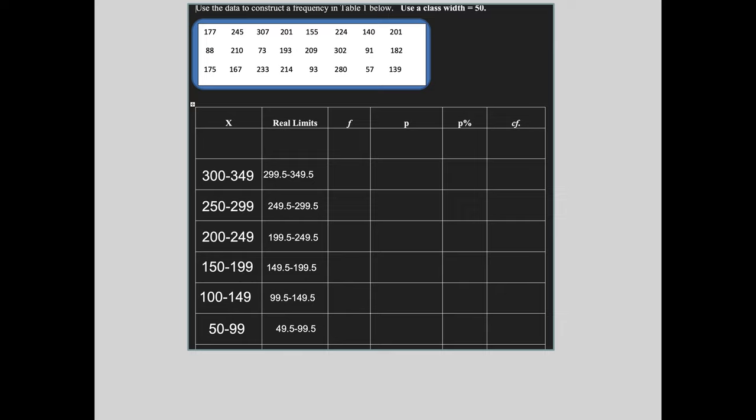So the first thing we have to do is put in the real limits. And when we talked about real limits, we always want to go one decimal place past the decimal places given in the interval. So for instance, in this first one here, it's 300 to 349, go one decimal place past and go down by a half. So 299.5 and up by a half at the upper end. So 349 and a half at the lower end of the next interval, go down by a half to 249.5 and up by a half to 299.5. So that's how we get our real limits.